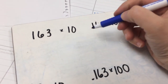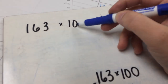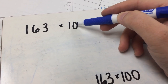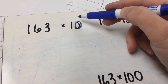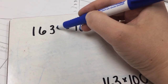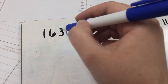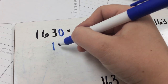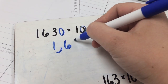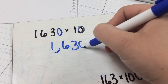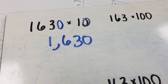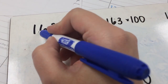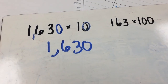Whenever we multiply by 10, any number, it's really easy. All you do is you look at how many zeros are in 10. There's one, and what you're going to do is you're going to add a zero to the end. So if you have 163 times 10, it's going to be 1,630 because you just tack a zero on there. Sometimes I just write the number first and then add the comma into where it needs to go.